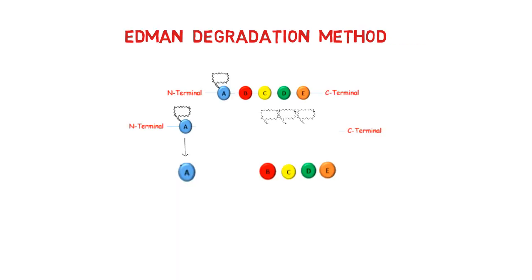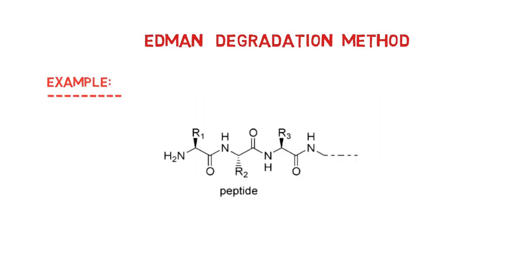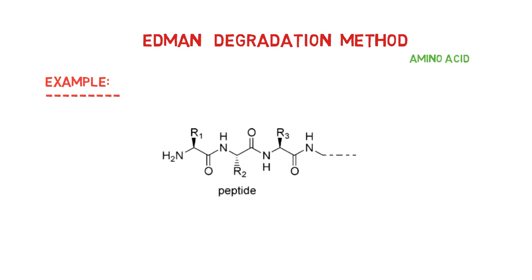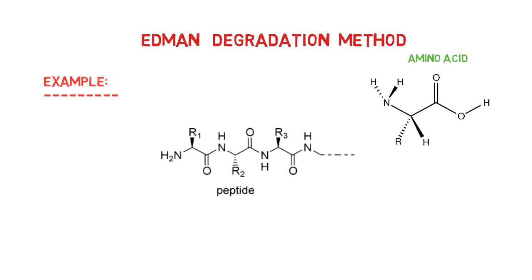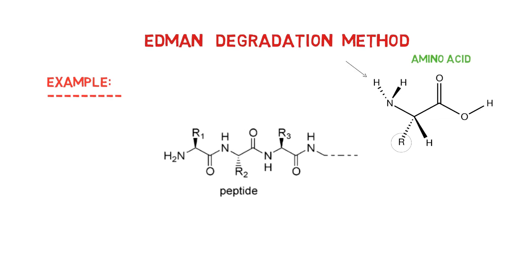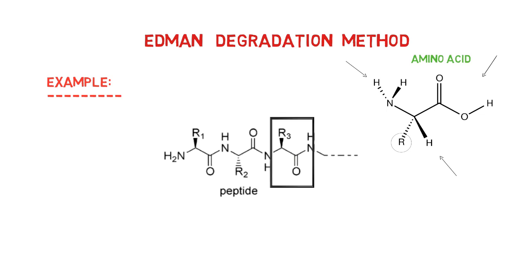Let us look at an example to better understand the entire process. As you may know, amino acids have four groups: an amino group, a carboxylic group, a hydrogen group, and an alkyl chain. Each amino acid has the same three groups, but the R group is unique. In this peptide chain, the first amino acid is here, the second is here, the third is here, and so on.